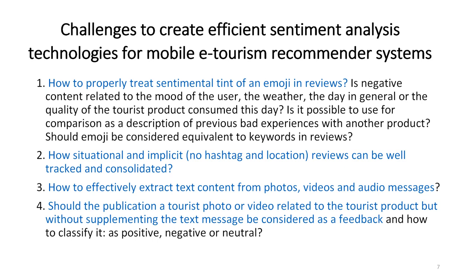Finding and retrieving useful information from user reviews of a tourist product in the social media space poses a number of challenges to developers of recommender applications. In particular: first, how to properly treat the sentimental tint of emojis in reviews? Is negative content related to the mood of a user, the weather, or the day in general, or the quality of a tourist product? Is it possible to use it for comparison as a description of previous bad experiences with another product? Should emoji be considered equivalent to keywords in reviews? Second, how can situational and implicit reviews, where there are no hashtags and location, be tracked and consolidated in social media?